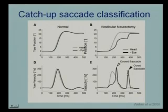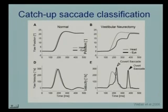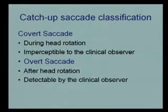In this patient one would see the overt saccade, although one does not see the covert saccade, one still knows that there is a deficit. If the patient made only a covert saccade, you wouldn't know they had a deficit. It is important that there are covert saccades which occur during head rotation — imperceptible to a clinical observer but measurable. And overt saccades which occur after head rotation are detectable by a clinical observer and are the clinical sign of canal paresis.